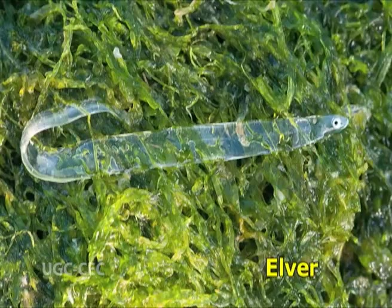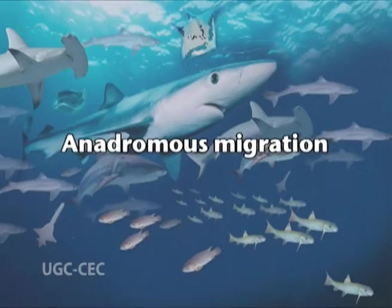The elvers are transparent and ribbon-like. The needle-like teeth are lost and the flattened body becomes cylindrical. The elvers, when about two to three years old, start ascending the river in shoals to reach a suitable resting place, where they feed and grow for some years to become yellow eels. The yellow eels on maturity change into silver eels and start the same cycle of migration again.